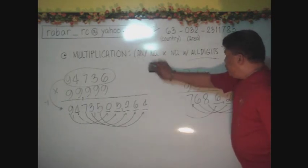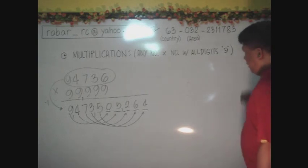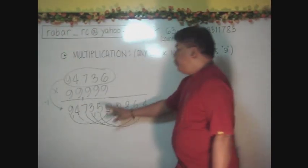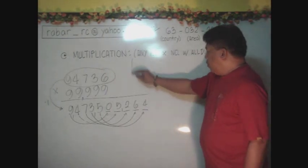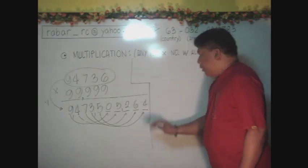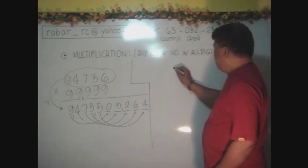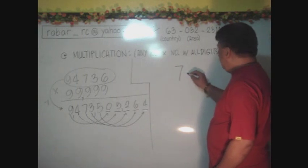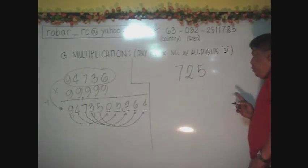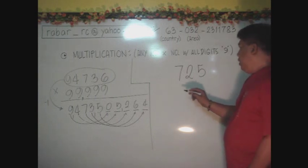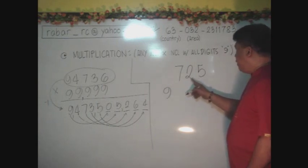Now, there is what we call a special case. Special case for this type of multiplication. What if you have, let us say, 725. And to be multiplied by a digit or a number with more than 3 digits here.